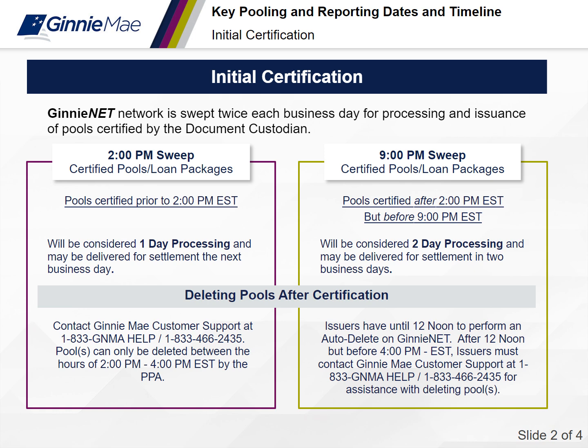You can delete on your own up to 12 noon. After 12 noon, pools can be deleted between 2 p.m. and before 4 p.m. by the pool processing agent. We'll ask you to send us an email with the pool number and your request to delete. Once a pool is deleted, we'll send you back a confirmation. You should then be able to edit and make your changes, apply your edits again, and resubmit.